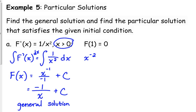The particular solution means we're going to plug in what they give us. They tell us that F(1) is equal to 0, so this function is equal to 0 when x is 1. So I'm going to take my general solution, and I plug in 0 for F(x), and I plug in 1 for x, and I'm going to solve for C.